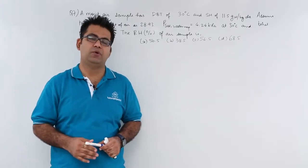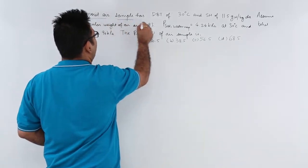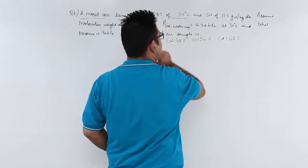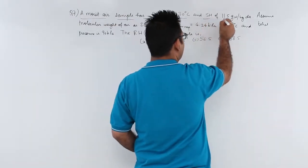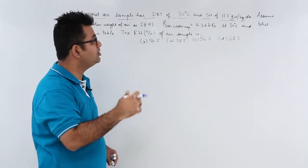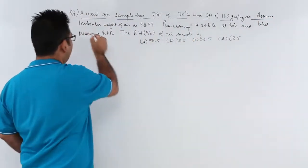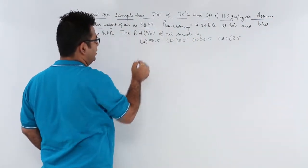Now let's have a look at question number 7. Question number 7 says: a moist air sample has a DBT of 30 degrees Celsius and a specific humidity of 11.5 grams of water vapor per kg of dry air. Assume the molecular weight of air as 28.93.